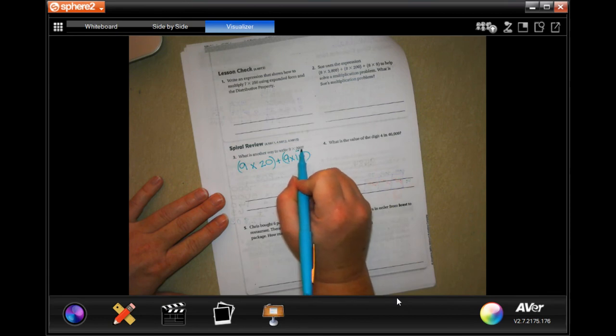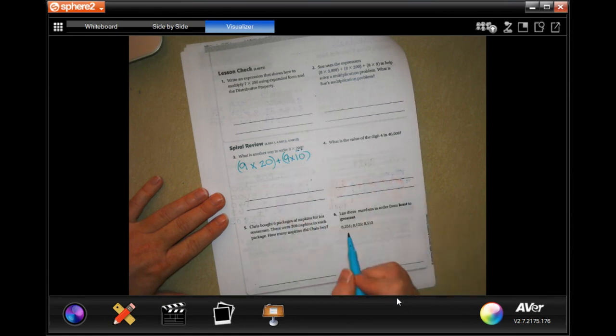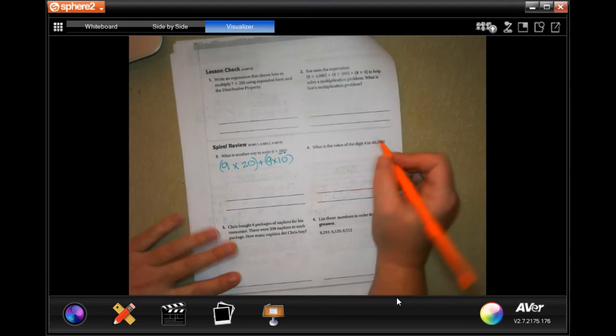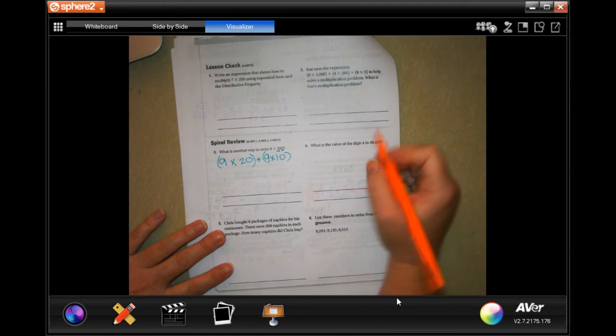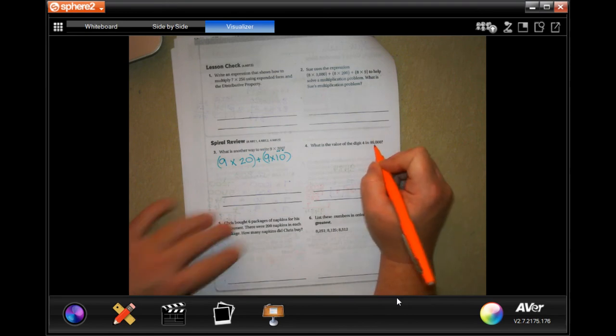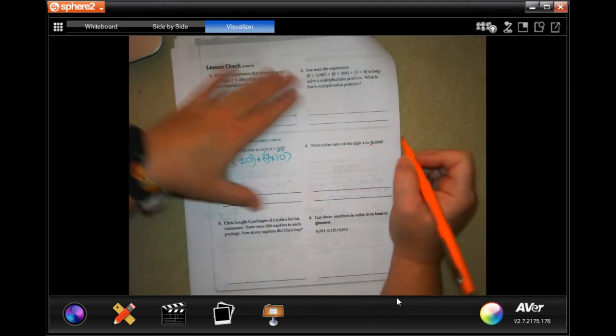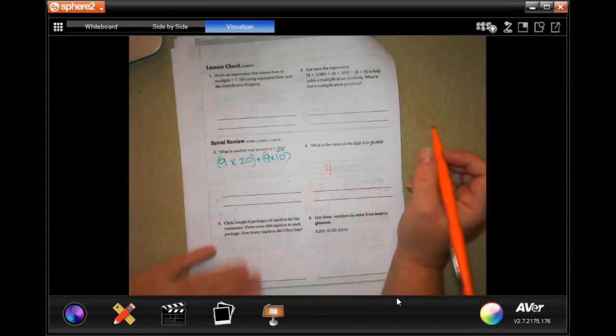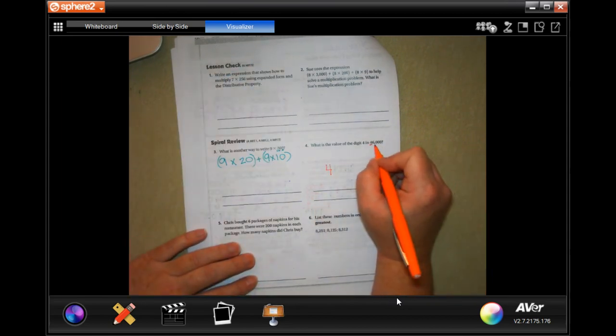Okay, all right, so what is the value of the digit four in 46,000? Well, here's the really cool thing. These ones are easy ones because we just drop down the number that it wants, then we count how many numbers are after it: one, two, three, four. And that's how many zeros we put, so 40,000.